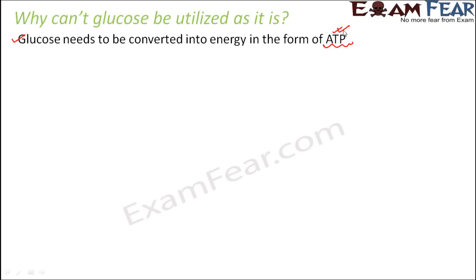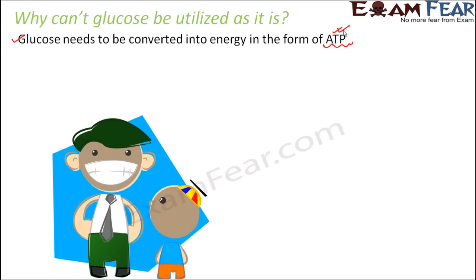The question is why this conversion is needed, and respiration is all about this conversion. The process of converting glucose into ATP is known as respiration, and that is what we will talk about in this lesson. But first, the basic question: if we know that glucose bonds have energy, why can't we utilize glucose directly? Let us take an example from day-to-day life to understand why direct utilization of glucose is not possible. Imagine you went out with your dad to a mall or shopping complex.